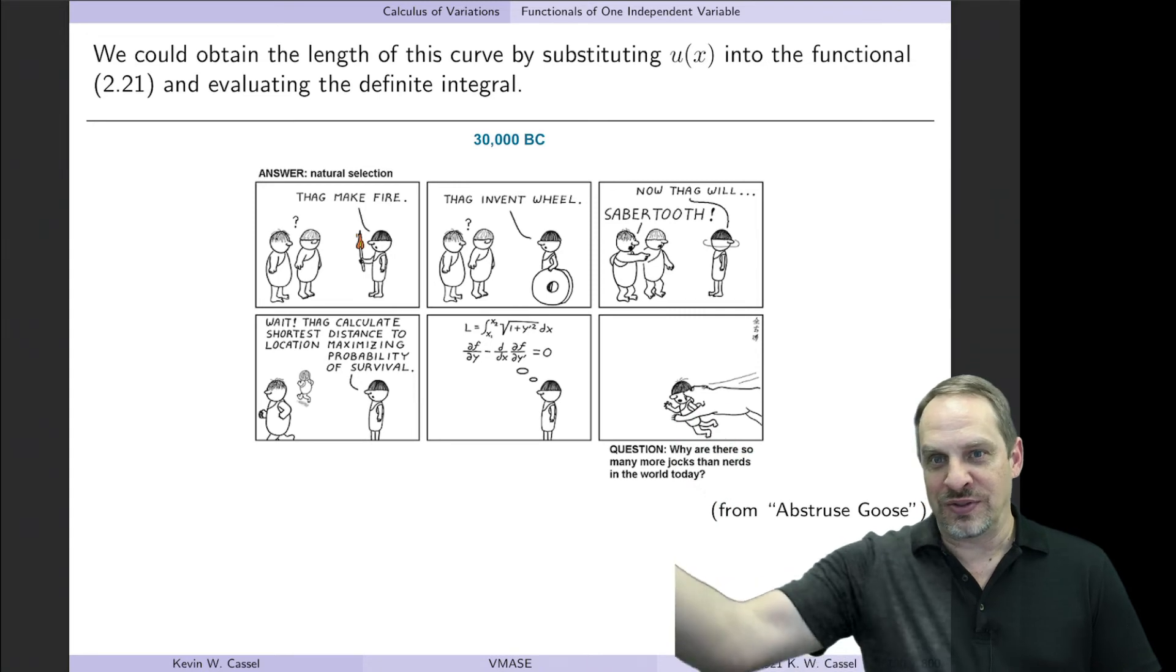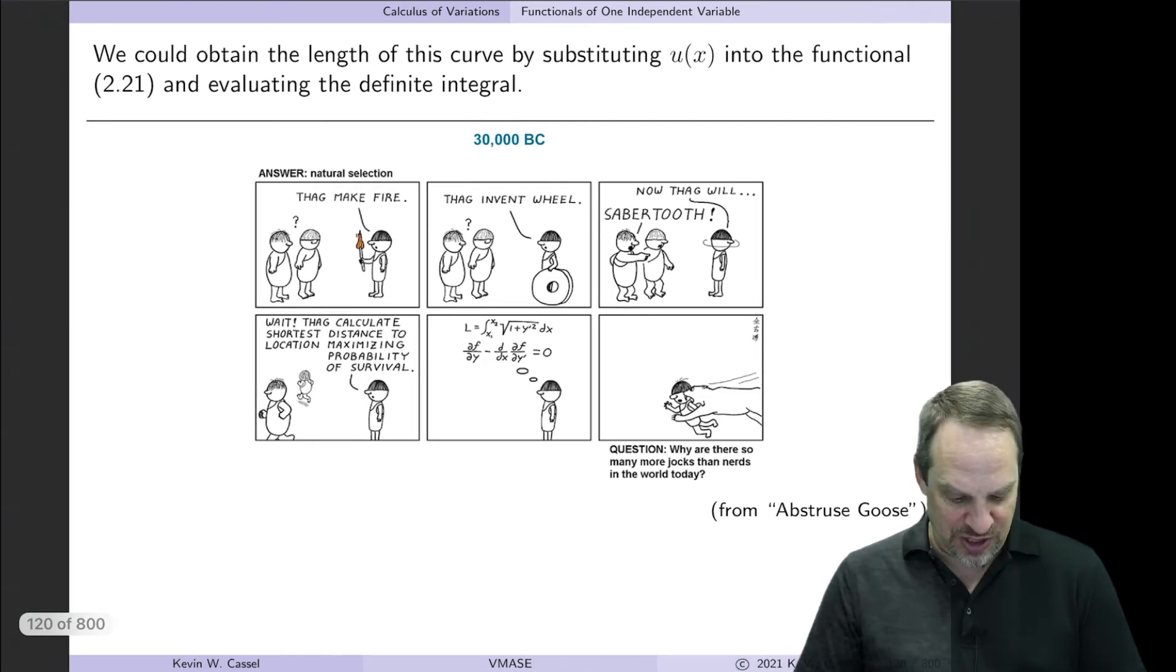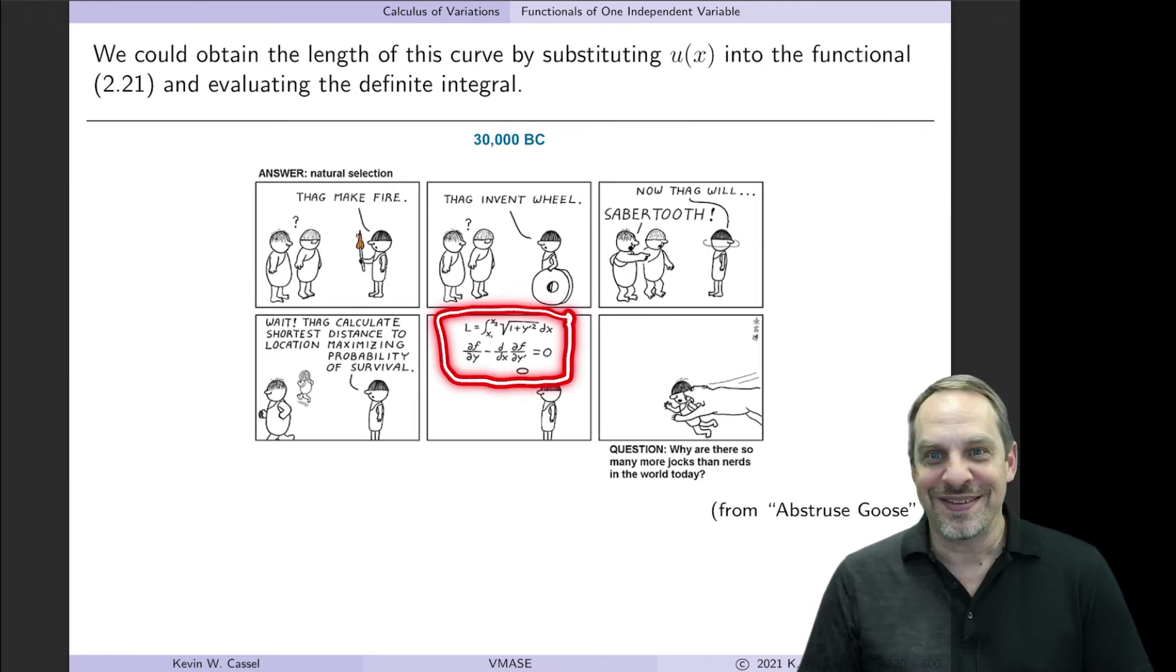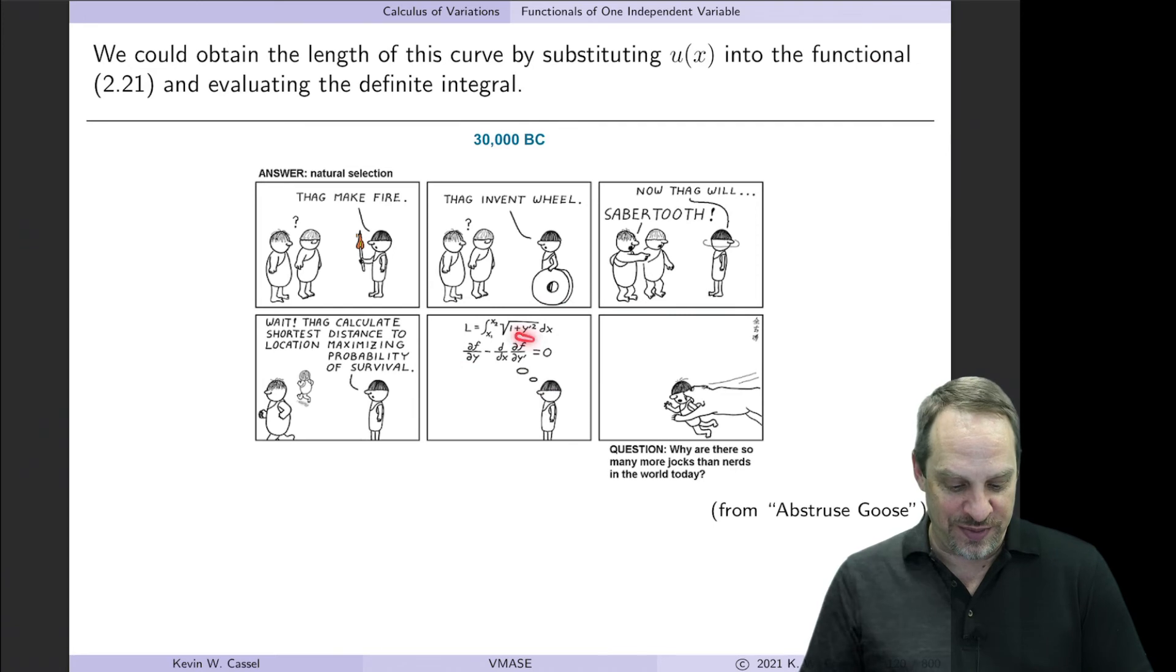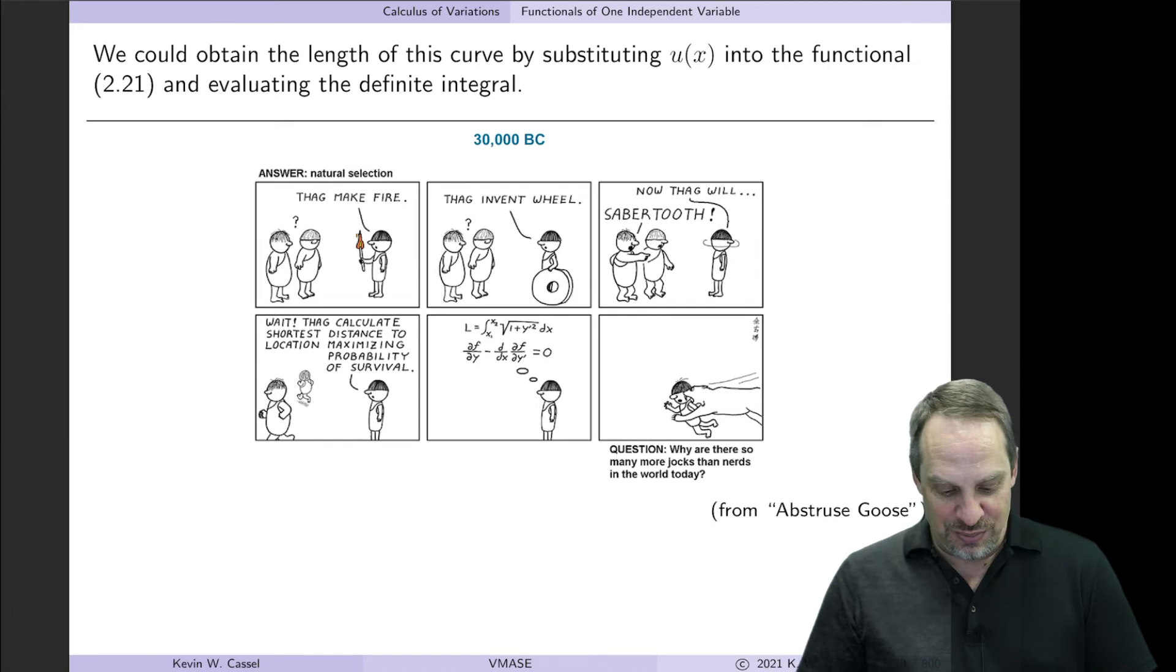Then they see a saber-toothed tiger coming. So what does Thag do? Thag's the smart guy, and he says, okay, well, there's a saber-toothed tiger coming at me. Where is the shortest distance to a location where I can hide and be safe from the saber-tooth? So look what he does. He solves the problem that we just did. Now, he used y instead of u as his dependent variable, and he used a little f instead of a big F as his integrand. But in any case, he decides he's going to solve the variational problem to get the shortest distance between two points. Well, just as it took us about ten minutes to do so, by the time he figures out the answer, of course, he has been eaten by the saber-toothed tiger, and his buddies have run away. So again, the answer is natural selection. And the question is, why are there so many more jocks than there are nerds in the world today? And the reason is because the jocks were smart enough to run when the saber-toothed tiger was coming, whereas the nerds were trying to do calculations of problems to save their lives. And, of course, that wasn't what was necessary in the moment.